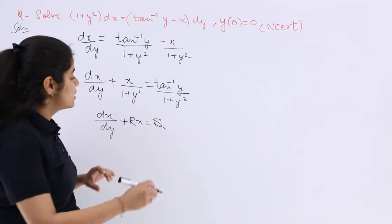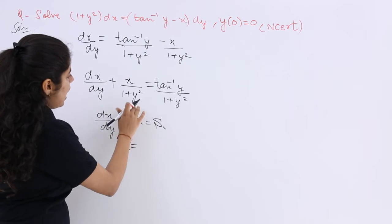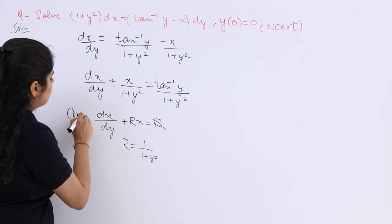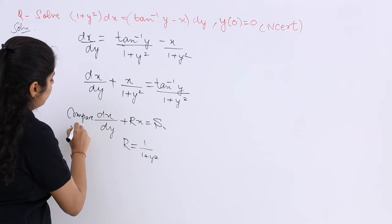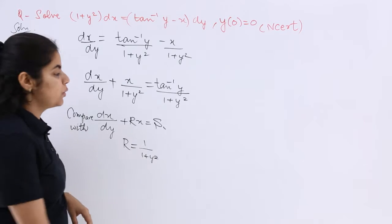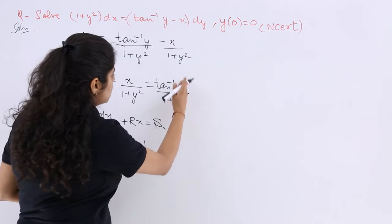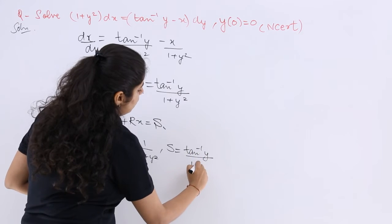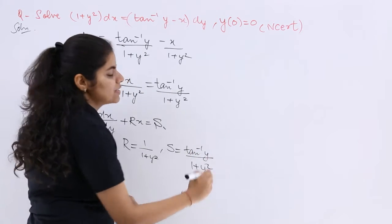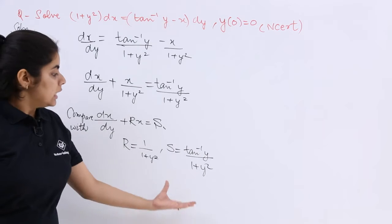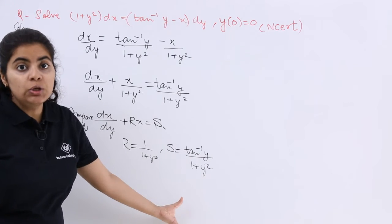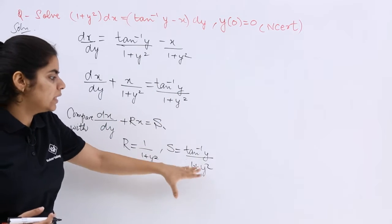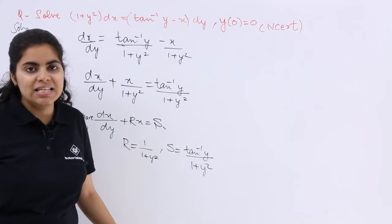This time, R and S are functions of y. So what is your R? R is 1/(1 + y²). Comparing, R = 1/(1 + y²) and S = tan⁻¹y/(1 + y²). This is the first step — convert to general form, then compare and obtain R and S.